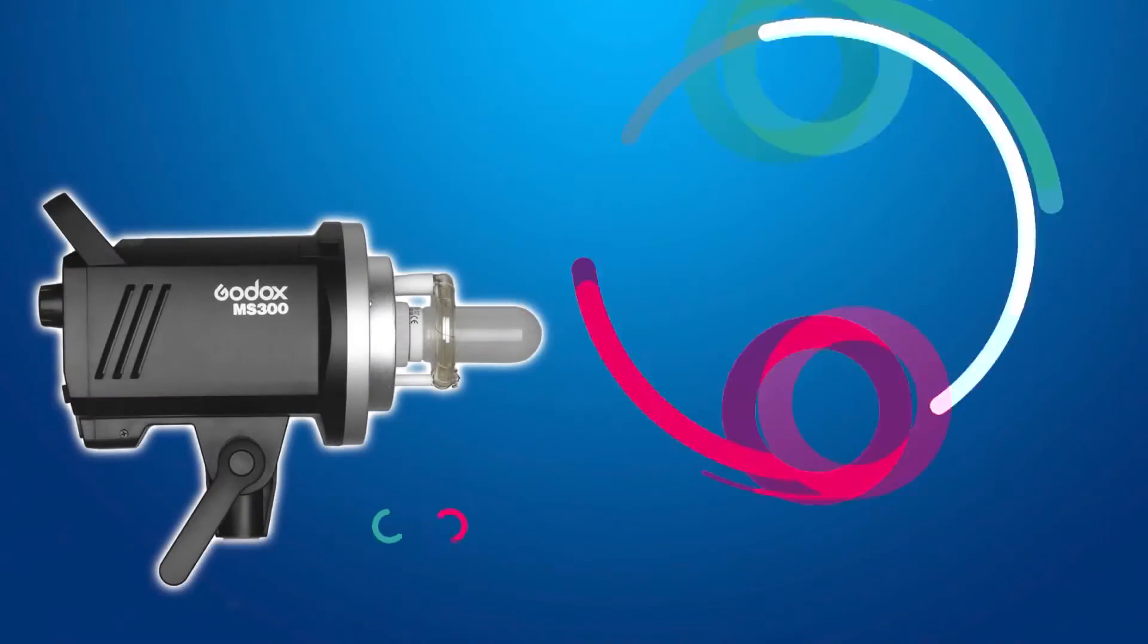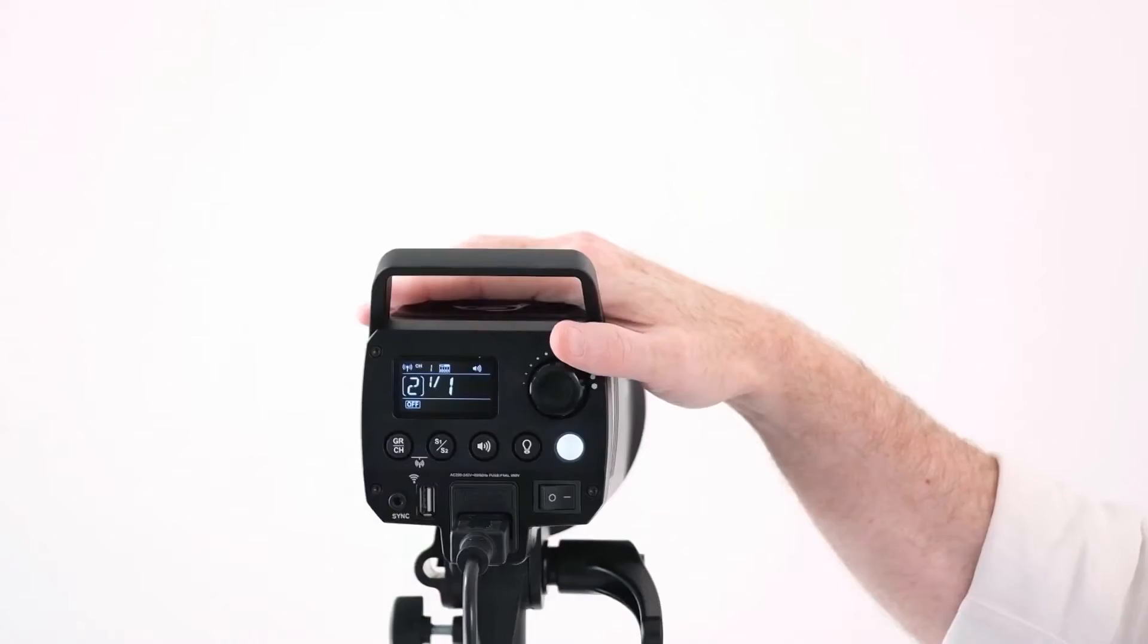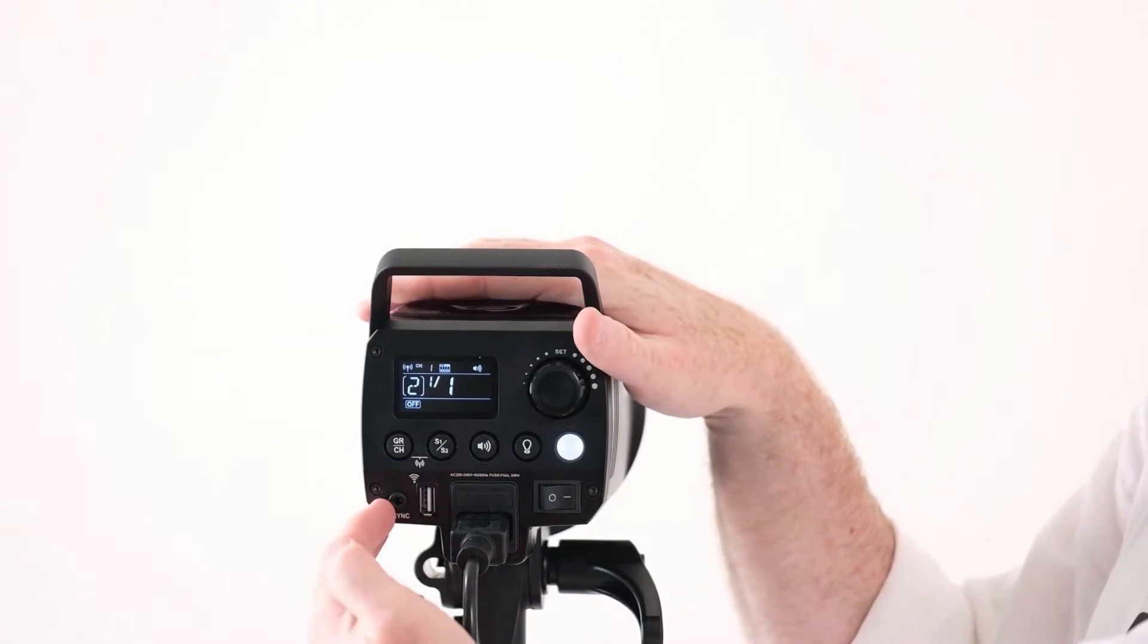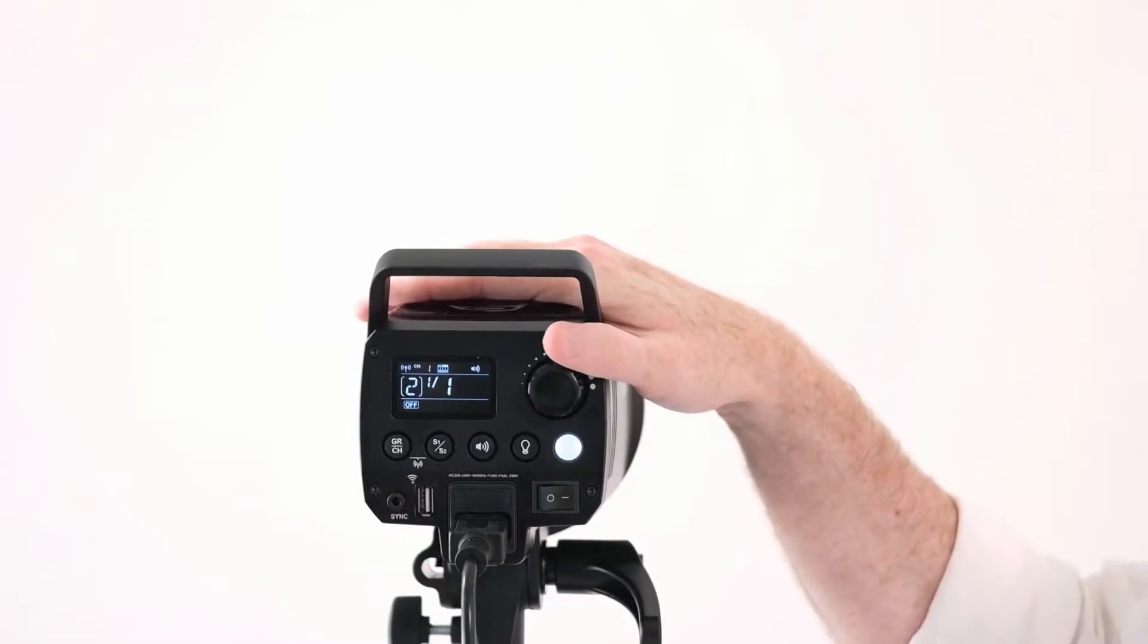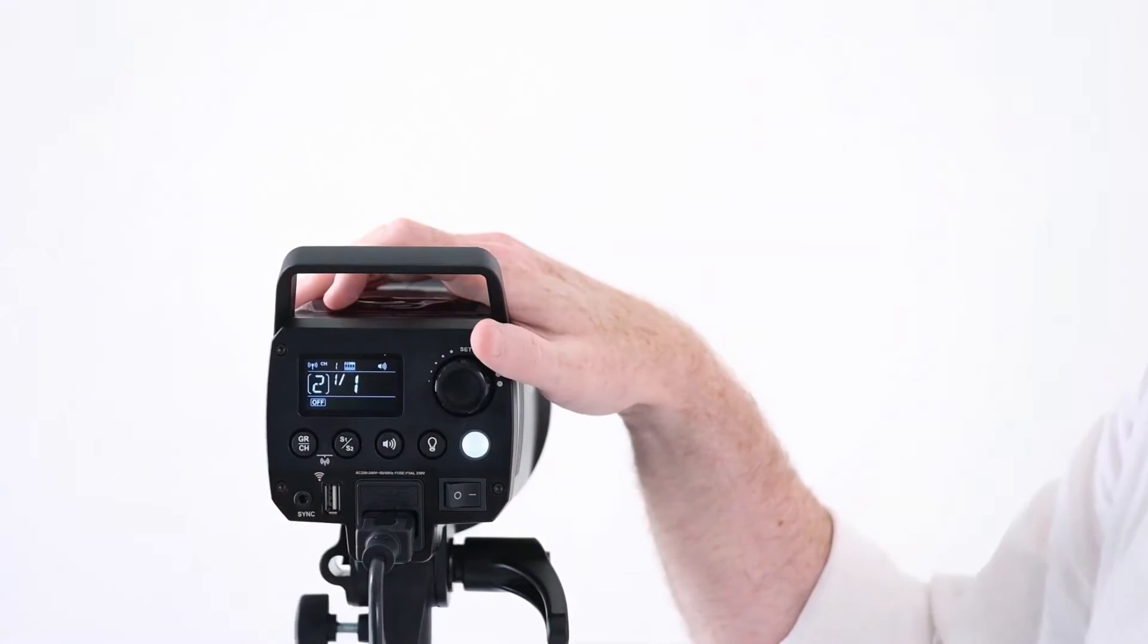Okay so let's talk about triggering this flash now. Now as I pointed out before it's got a sync cable connector here so you can plug say a cable direct from the camera which is probably not what you want to do. Or you can plug in some other radio technology if you've got some other radio transmitting system. But the real beauty of this flash is it's got a bunch of triggering mechanisms built into it.